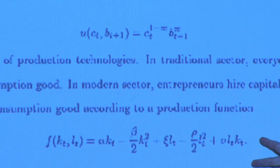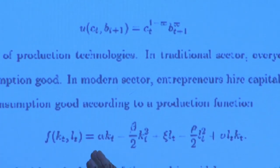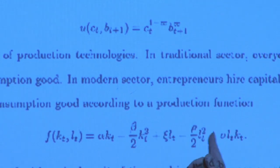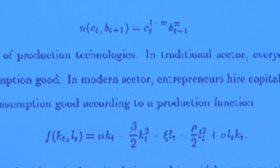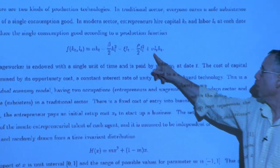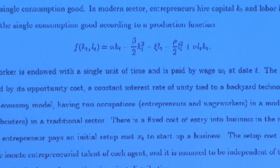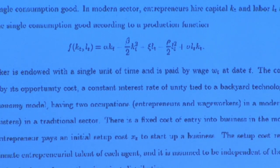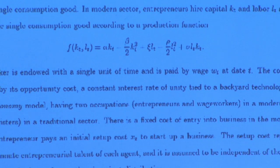This production function was meant to be general. It has capital, labor, the square of each, and an interaction term — so it's like translog. Approximately it can approximate almost any function reasonably well. But the problem is it carries with it five parameters: alpha, beta, c, rho, and sigma.